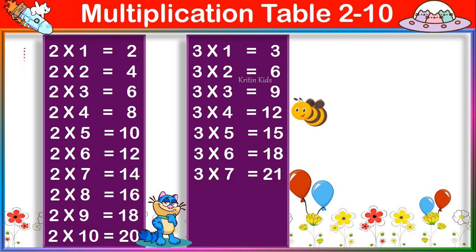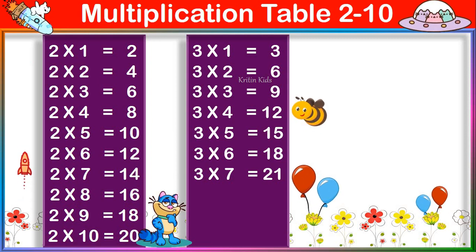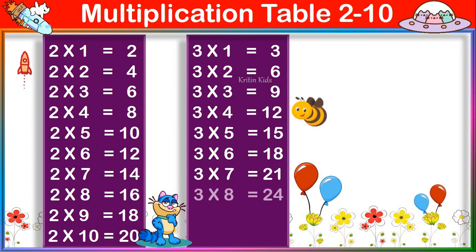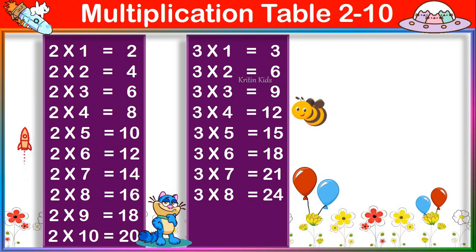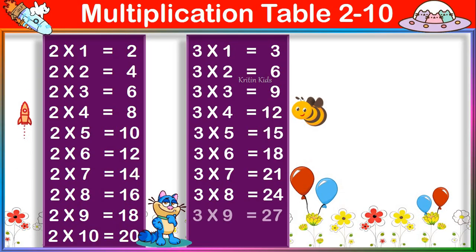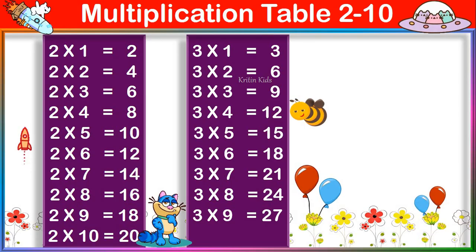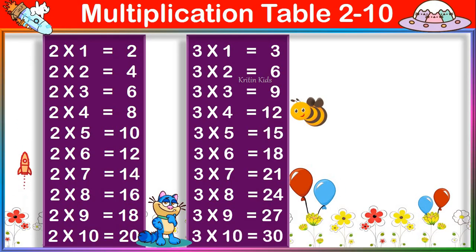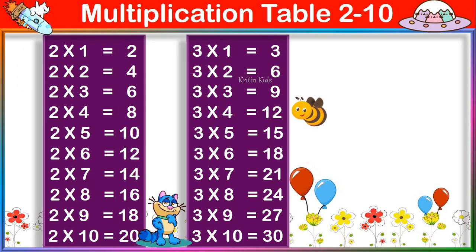3 seven's are 21, 3 eight's are 24, 3 nine's are 27, 3 ten's are 30.